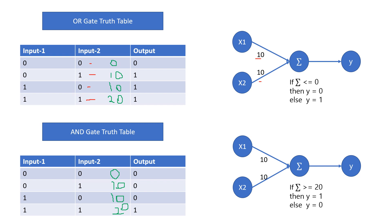Now you can easily calculate the activation function condition. All summation values greater than zero give output one. We put the condition: if summation is less than or equal to zero, output is zero. For all other conditions it is going to give output as one.